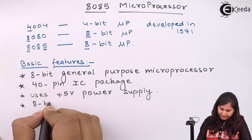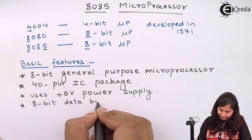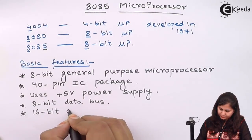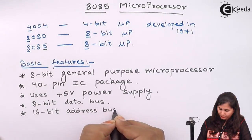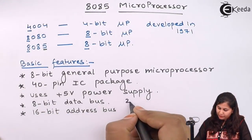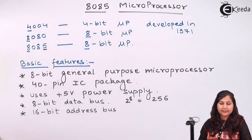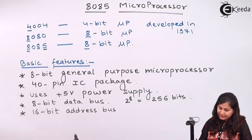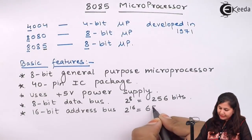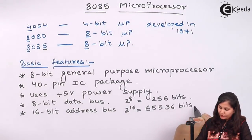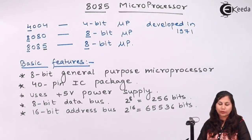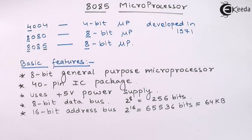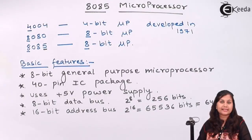It has an 8-bit data bus and a 16-bit address bus. If we calculate 2 raised to the power 8, it comes out to be 256, so it can have 256 combinations of data. And 16-bit means 2 raised to the power 16, which comes out to be 65,536. So it can address 65,536 memory locations, which comes out to be 64 kilobytes. So the memory size of the 8085 microprocessor is 64 kilobytes.